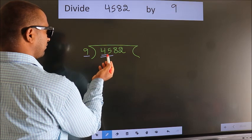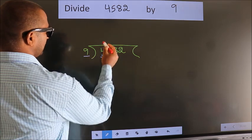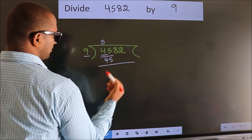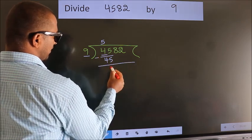When do we get 45 in the 9 table? 9 fives, 45. Now we should subtract. We get 0.